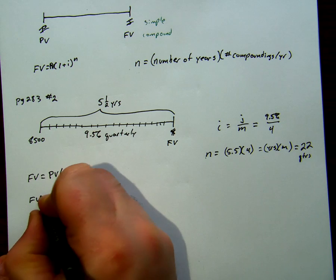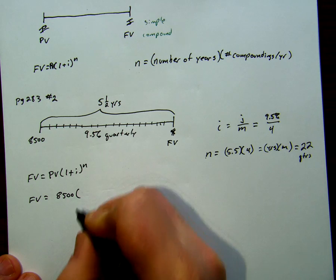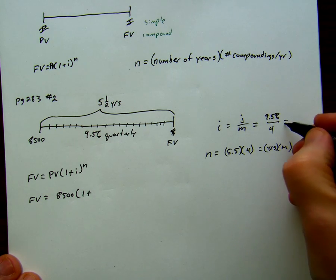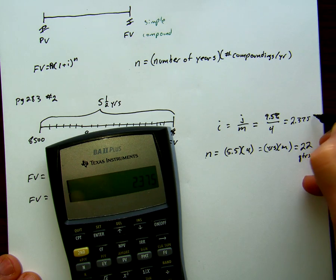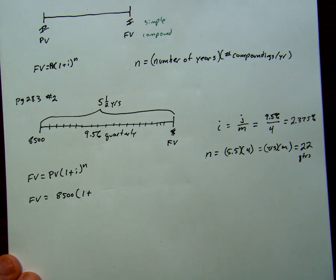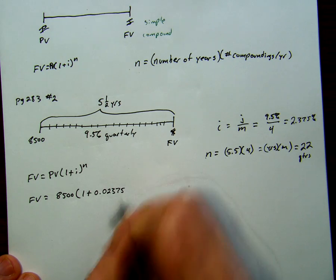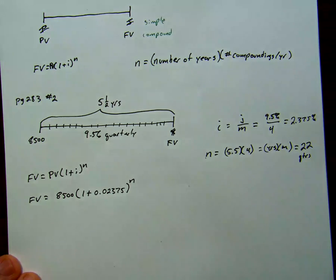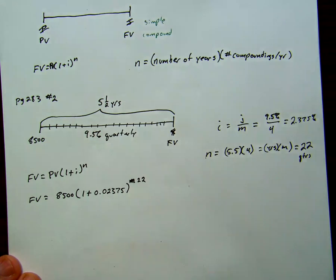We can say our future value is equal to our present value, our 8,500, times one plus, our i was 9.5 divided by 4, 2.375%. As we put that in the calculator, that's 0.02375 to the 22.